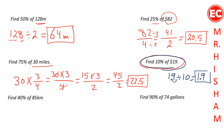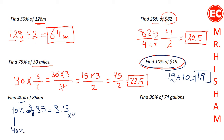To find 40% of 85, first find 10% of 85, which is 8.5 by moving the decimal one place to the left. Then multiply that result by 4: 8.5 plus 8.5 is 17, and 17 plus 17 is 34. So 40% of 85 is 34.